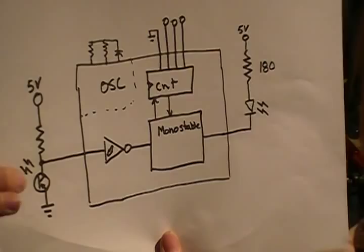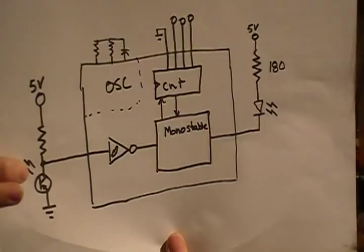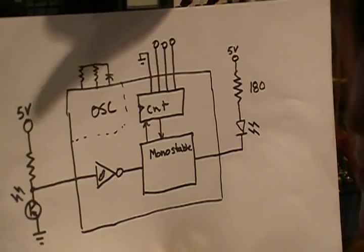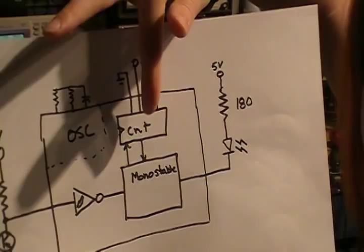So I have a phototransistor that's pulled up to VCC, and then when light strikes the phototransistor, it turns on, starts conducting, and will pull this node right here down towards zero. So I fed that into one of the Schmidt triggers, which, when light strikes this IR, this is an IR phototransistor that I use, it'll trigger the monostable circuit, which then will start the counter, which will start the oscillator.